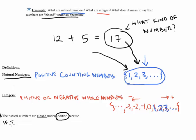Because if I add any two—it didn't just work with 12 and 5, it could have worked with other numbers as well—if I add any two natural numbers, the result is another natural number.